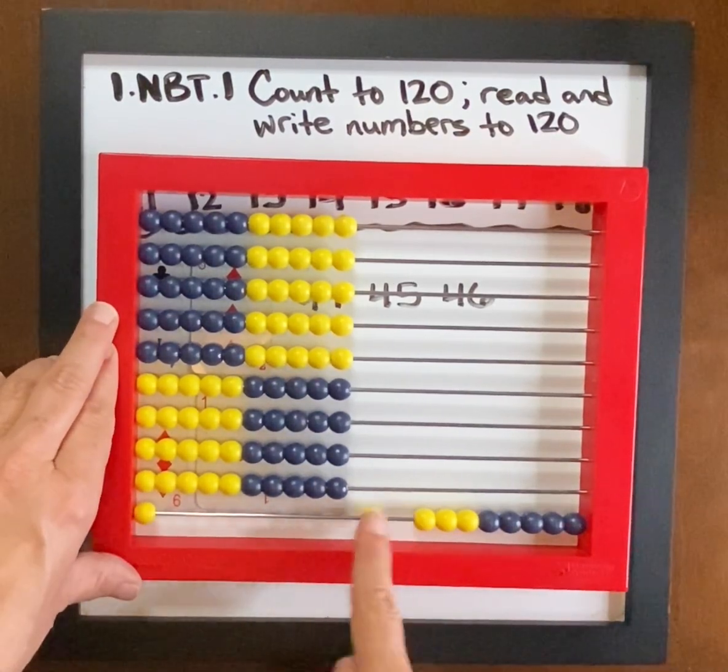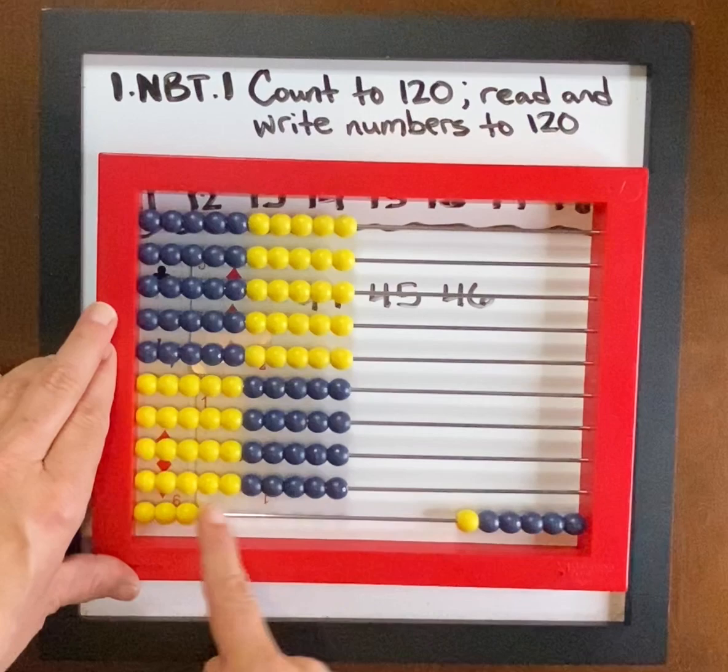So here we have 9, 10, 1, 9, 10, 2, 9, 10, 3, 9, 10, 4.